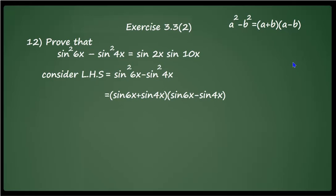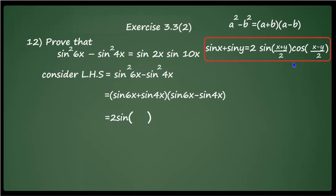Now apply the transformation formula to each factor. The first term, sin 6x + sin 4x, is of the form sin x + sin y, where sin x + sin y = 2 sin((x+y)/2) · cos((x−y)/2). Applying this with x = 6x and y = 4x gives 2 sin((6x+4x)/2) · cos((6x−4x)/2).